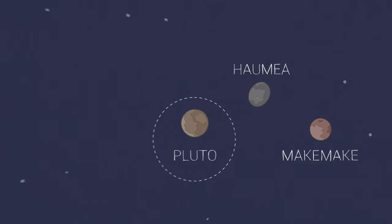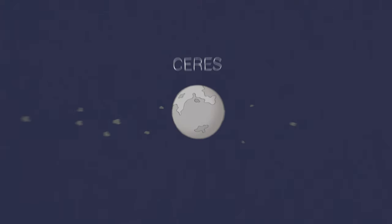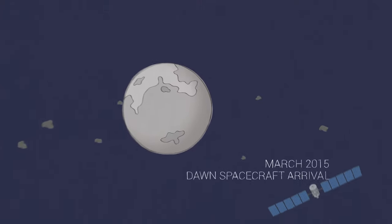Pluto is the most famous, but closer to home is another mysterious world. Ceres, the first dwarf planet to be visited by a spacecraft.